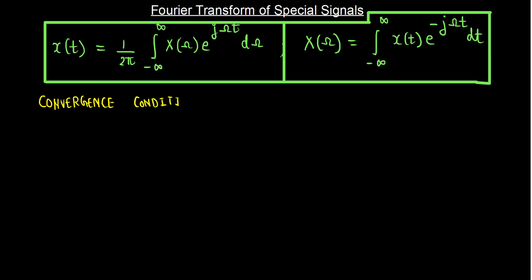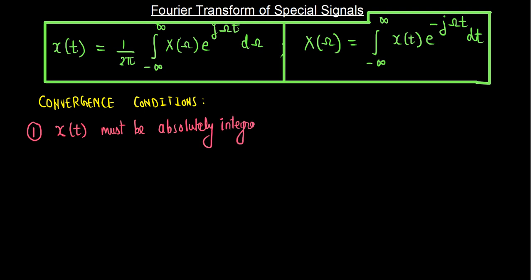As we have seen for the Fourier series, the first condition is that the signal X(t) under consideration must be absolutely integrable. That means the integral from minus infinite to infinite of |X(t)| dt must be finite. This was the very first Dirichlet condition.